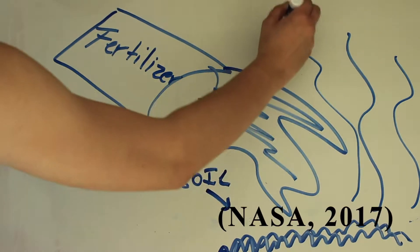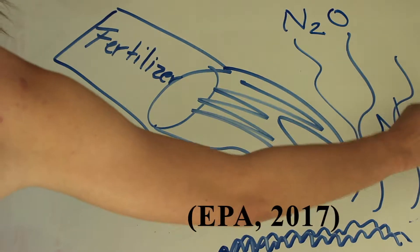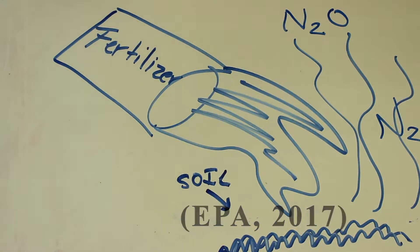Globally, about 40% of total nitrous oxide emissions come from human activities. Of that number, 79% is released through agricultural soil management.